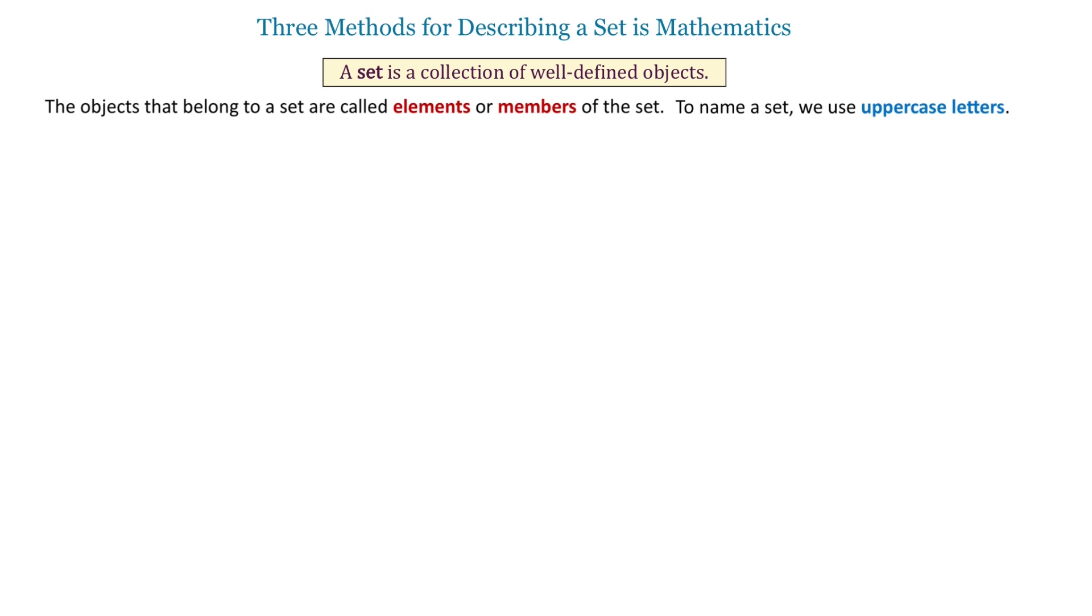In this video, we will see three methods for describing a set. So, let's say we have a collection of numbers 1, 2, 3, 4, and 5. To describe a set that contains these numbers, we can use one of the three main methods.